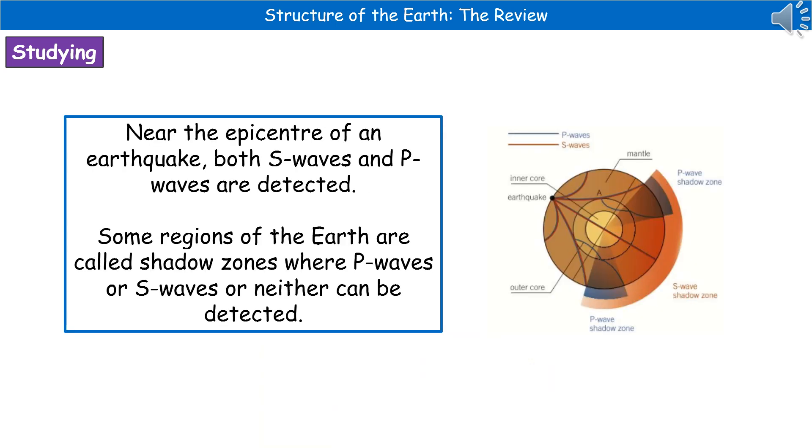Consider what happens during an earthquake and how we can use those waves. Near the epicenter—the origin of the earthquake—both S-waves and P-waves are detected. However, we can't detect those waves everywhere across the Earth's surface, even though we have seismographs everywhere. Some regions are called shadow zones.